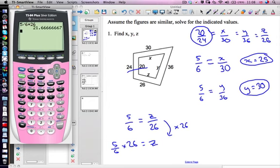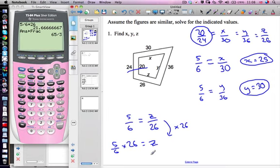And I can get my calculator to put that as a fraction. There we go. So z equals 65 over 3.